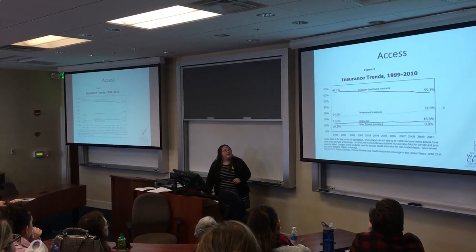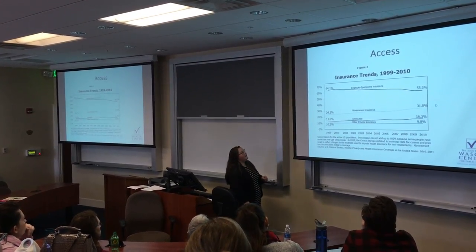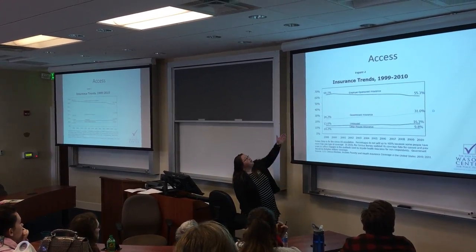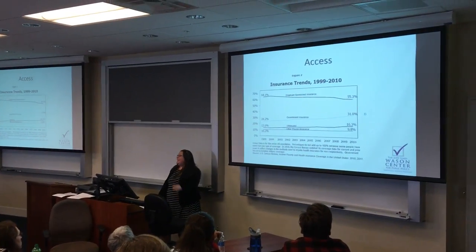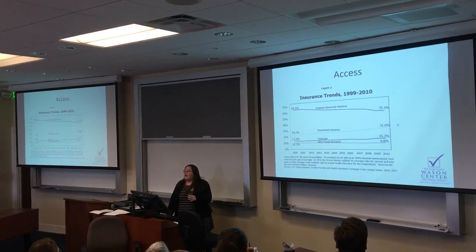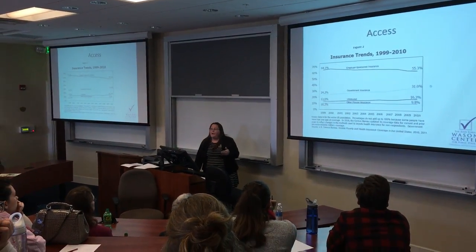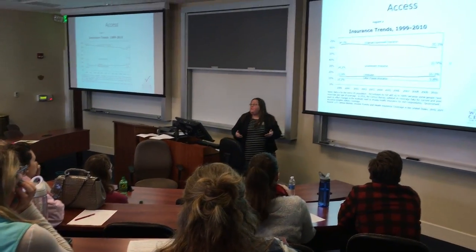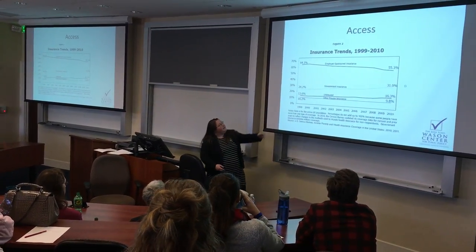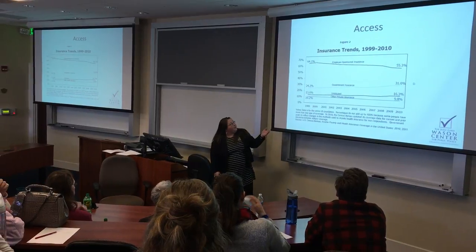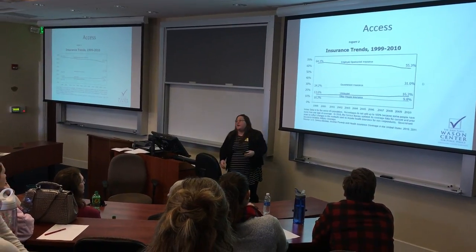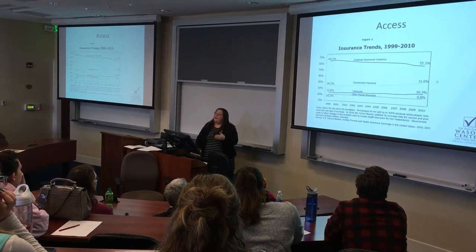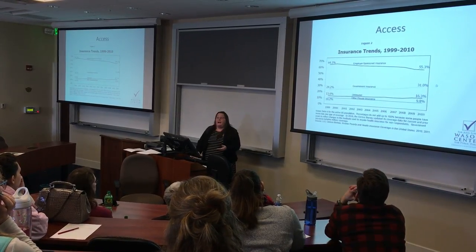Let's look at access. This is an insurance trend graphic from 1999 to 2010. You can see that most Americans are receiving their insurance through an employer-sponsored plan — a really interesting system. You could argue there's a lot of burden on employers to provide health insurance, which is kind of unique compared to other democracies using single-payer, government-run options. The uninsured rate was at 13% in 1999 and was ticking upward in 2010 when the law was passed — translating to about 48 to 50 million people without insurance.